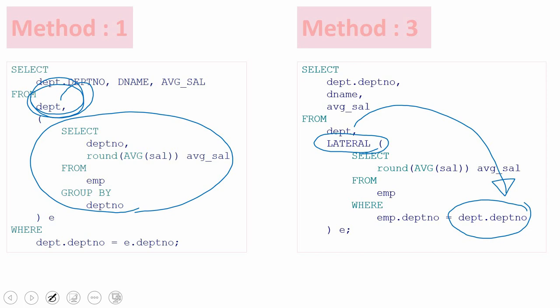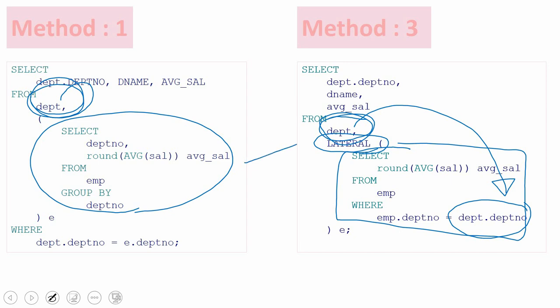This method three executes similarly to method two: for every record in the department table, the lateral inline view gets executed and results are returned. For department 10, the average salary is computed and returned; then for department 20, the inline view executes and returns average salary for 20; and for department 30 it returns average salary for department 30. This is similar to the correlated subquery concept normally used in the SELECT clause.